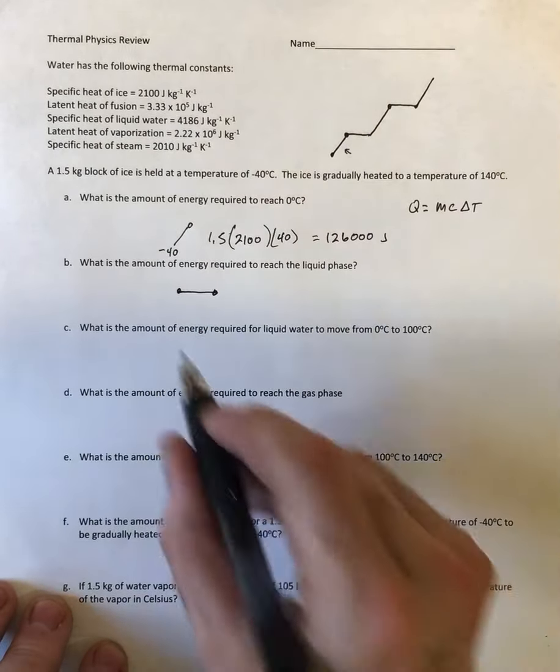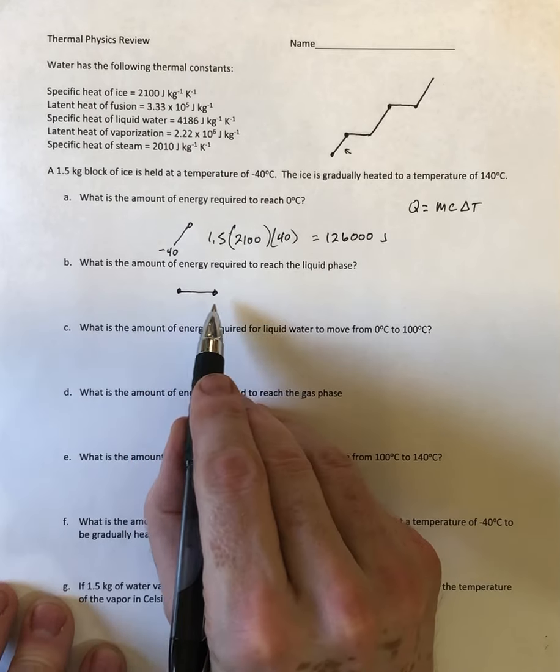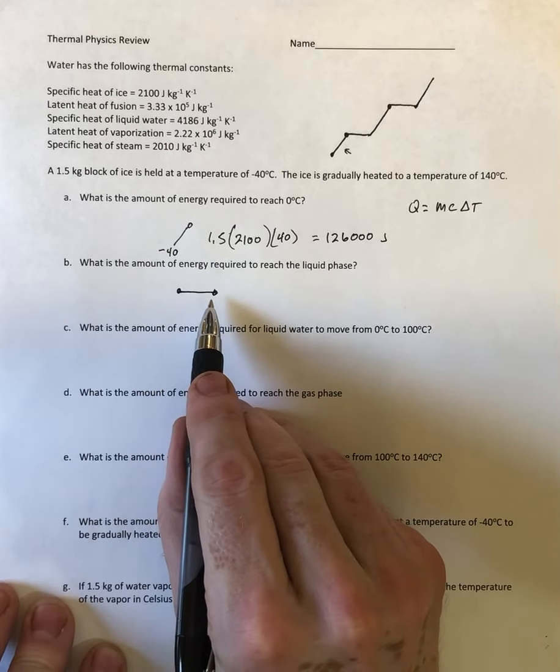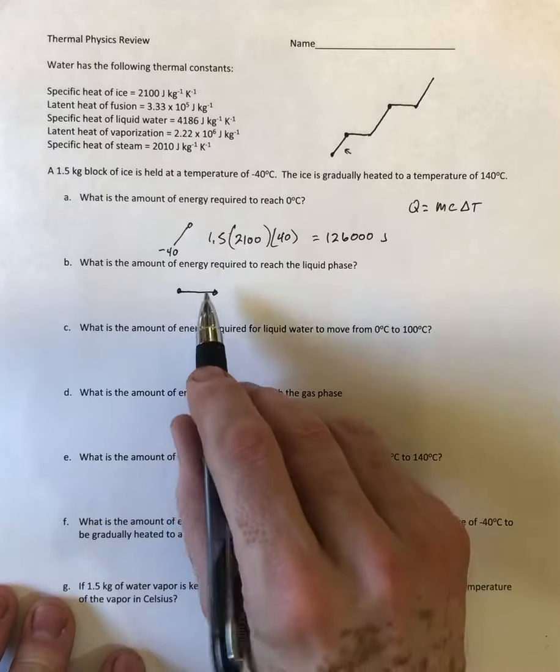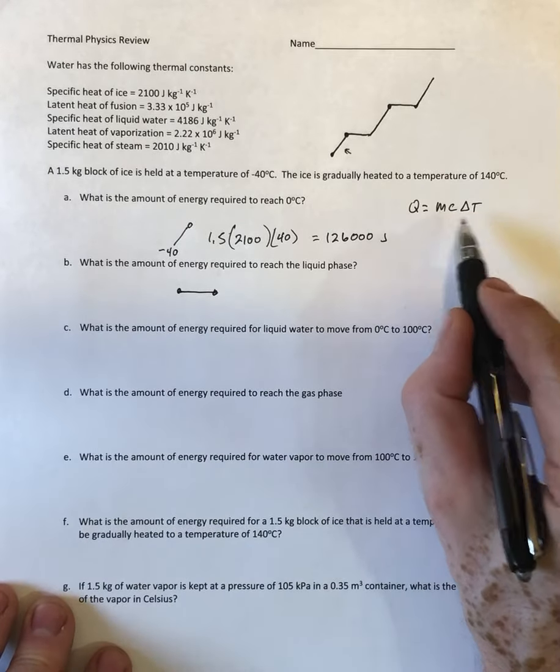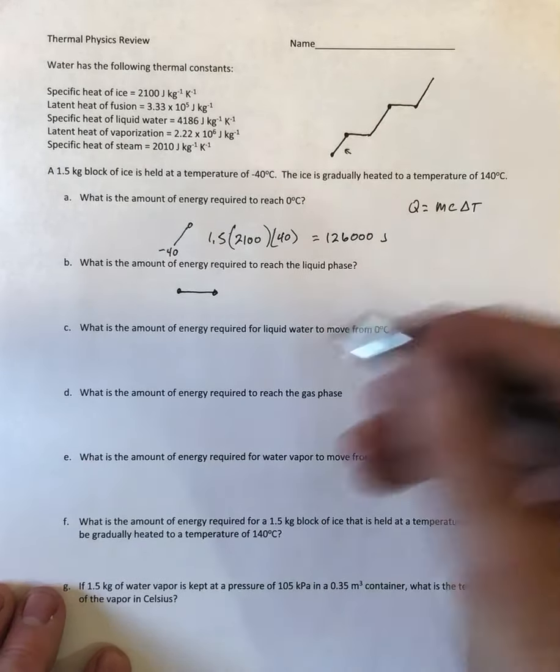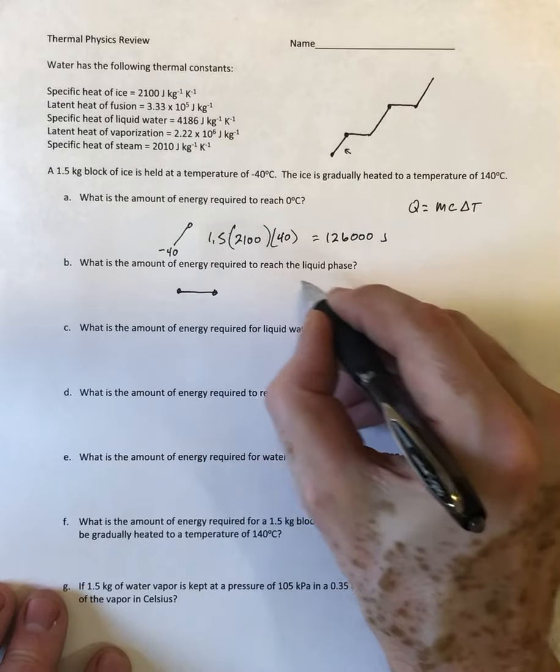There's no change in temperature, so I want to use this equation but without the temperature change. In this case my equation is going to be Q is equal to the mass times the latent heat.